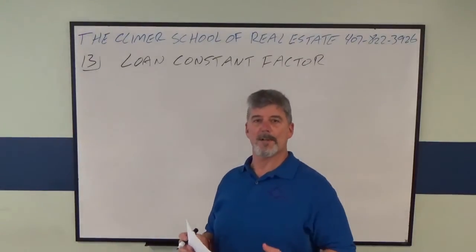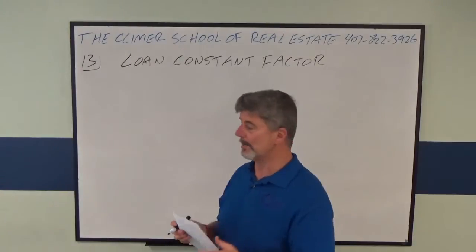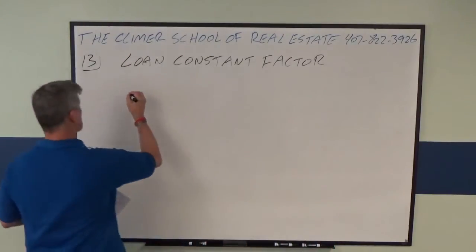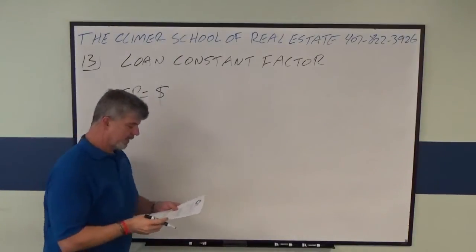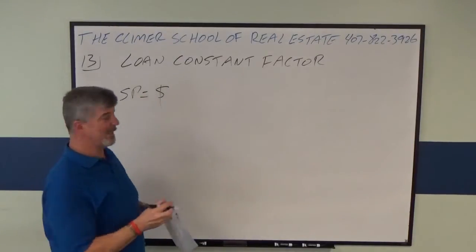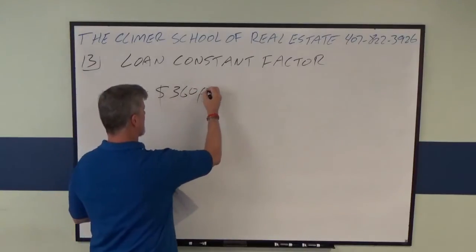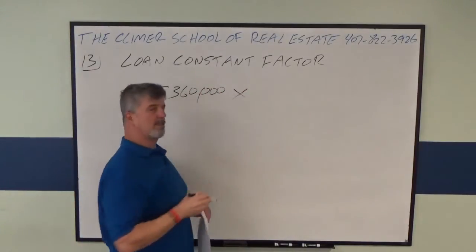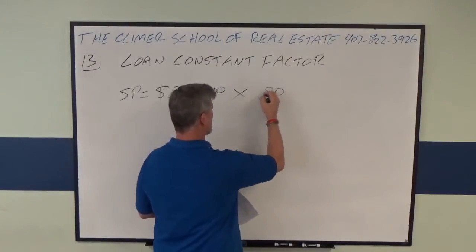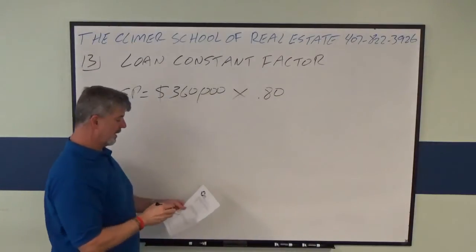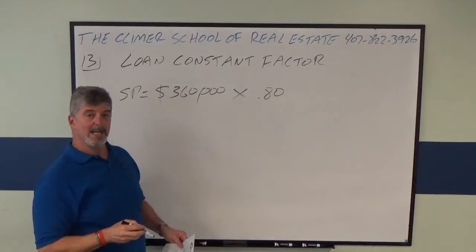First of all, you have to figure out what the loan amount is. You know the sales price, you know the LTV. Sales price, according to the problem, is $360,000. LTV is 80%, so I'm going to multiply by .8. Your loan amount is $288,000.